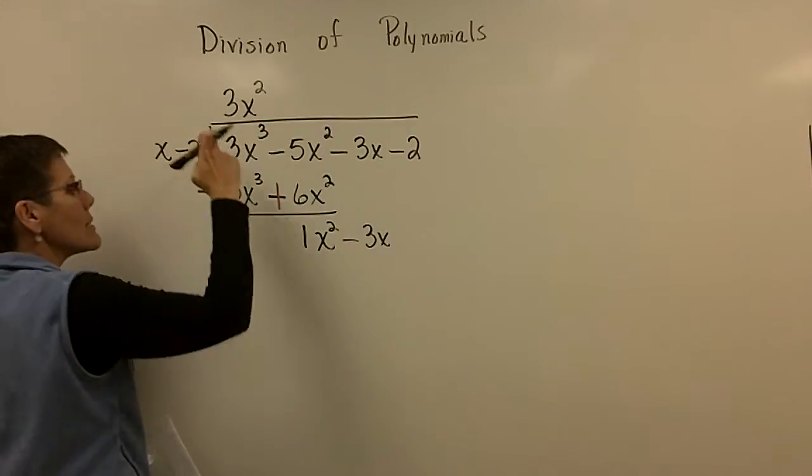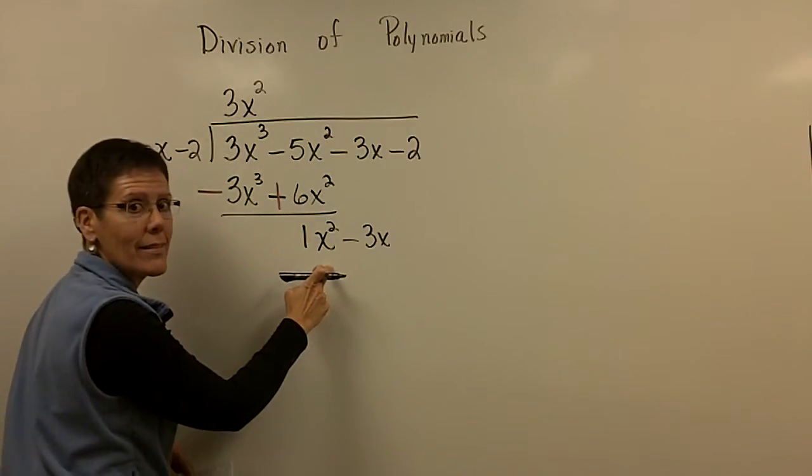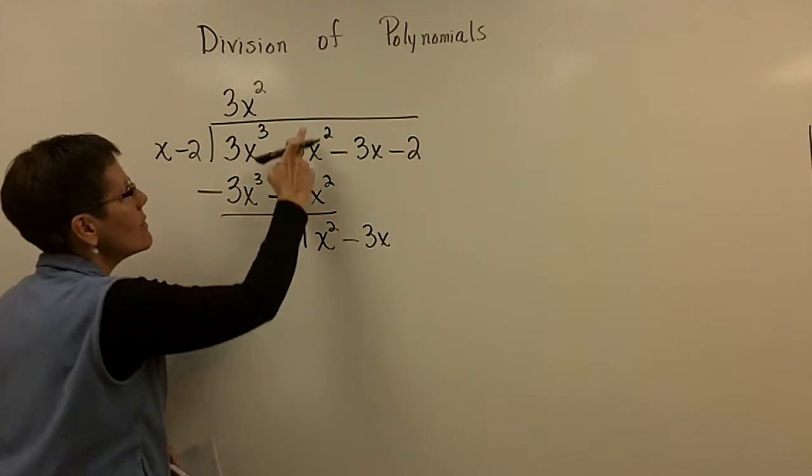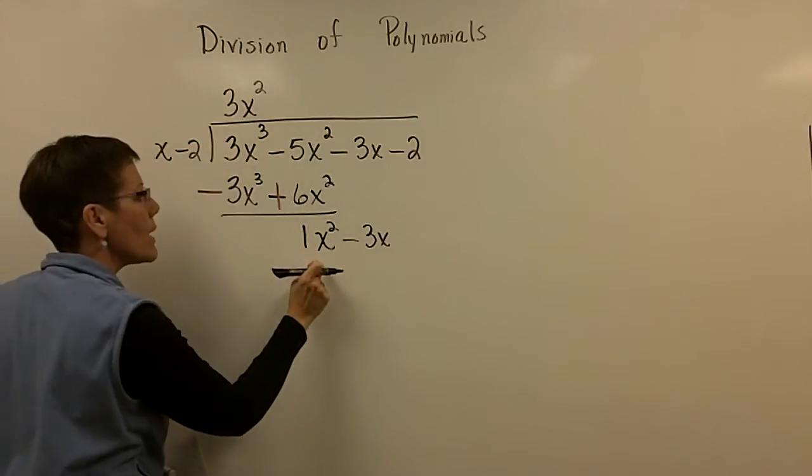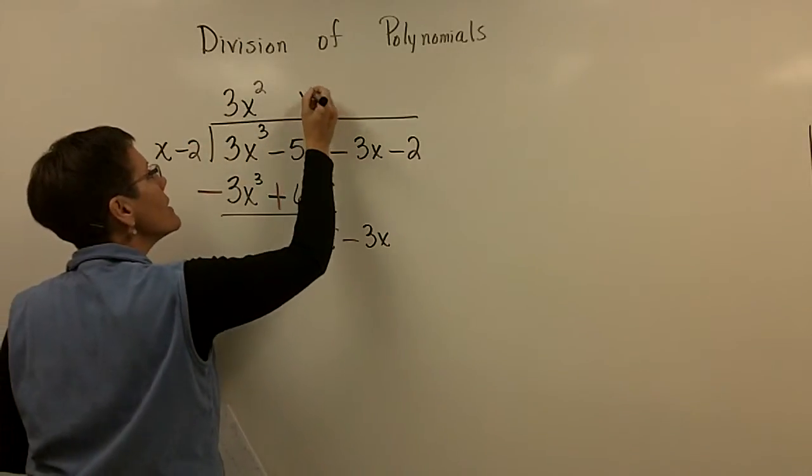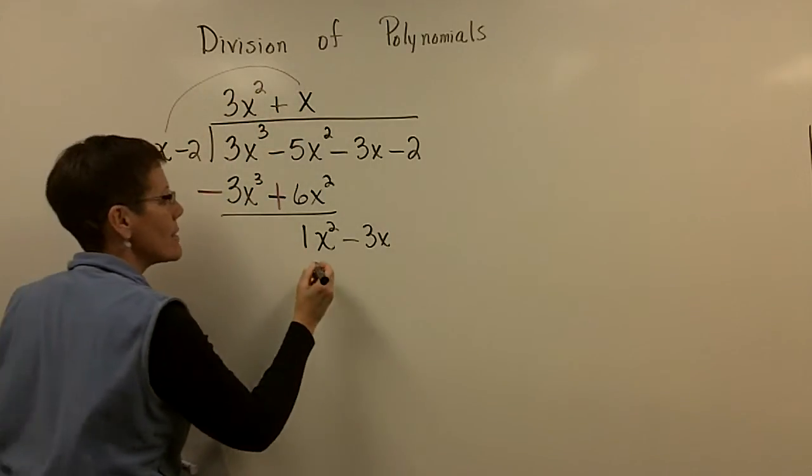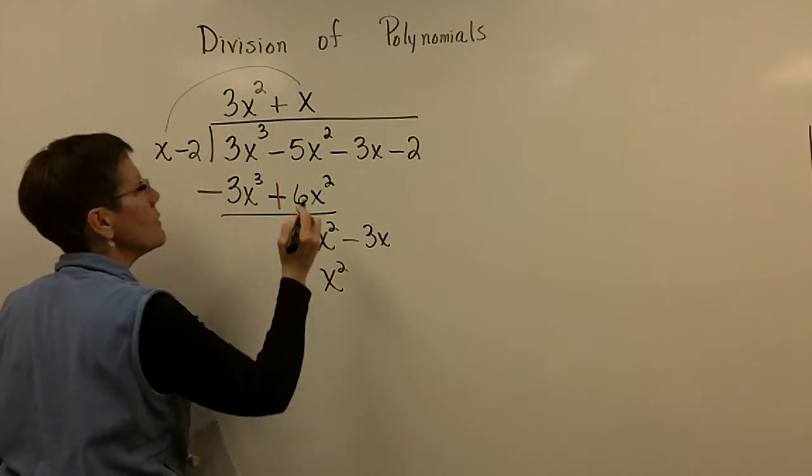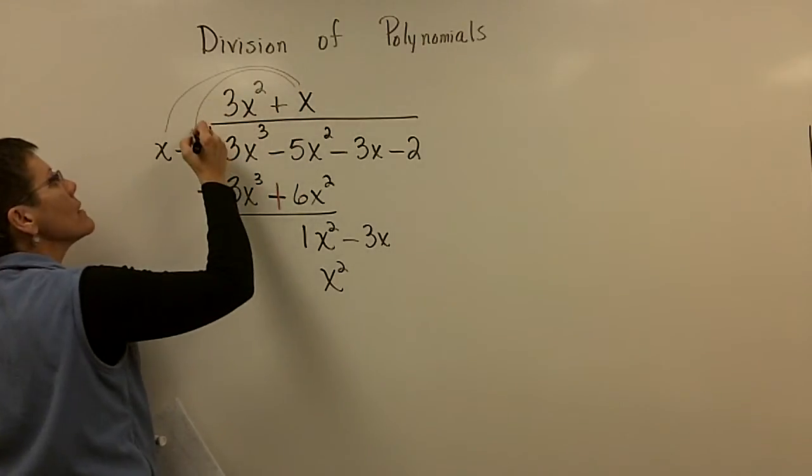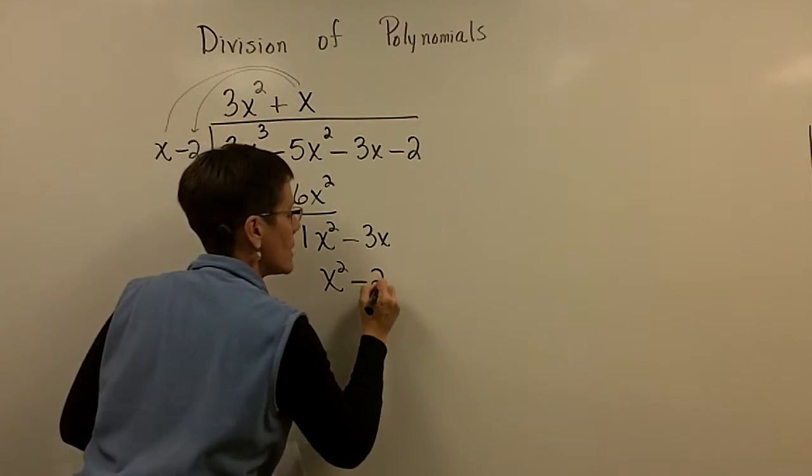let's now go ahead and say to ourselves, what times x gives you x squared? What times x gives you x to the second power? Oh, it's x. Got to have a plus sign there. It's a positive x times x gives you 1x squared. And then this positive x times a minus 2 is a minus 2x.